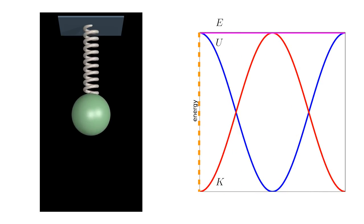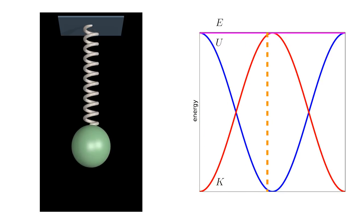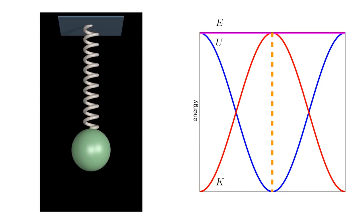In its initial position, at the top of the oscillation, all energy is potential. As the mass travels downward, the spring pushes downward, so the mass accelerates downward and the kinetic energy increases.